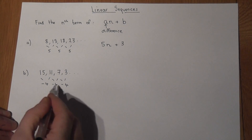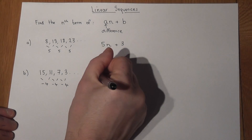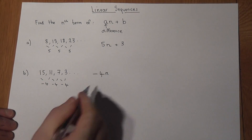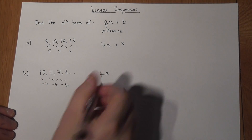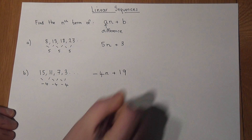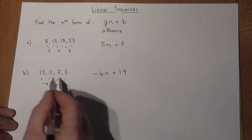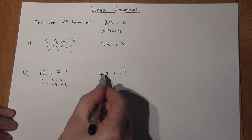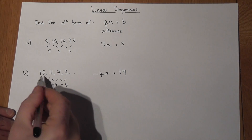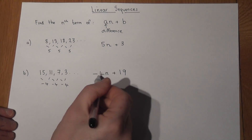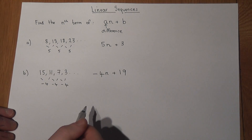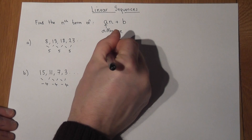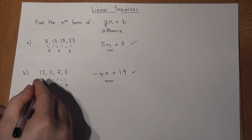In the second sequence, the difference is minus four, so rather than 5n I'll put minus 4n. I'm at minus four and I want to start at fifteen, so I've got to add on nineteen — giving minus 4n + 19. To check: if n is one, minus four plus nineteen is fifteen. If n is two, minus eight plus nineteen is eleven. These nth terms generate these sequences.